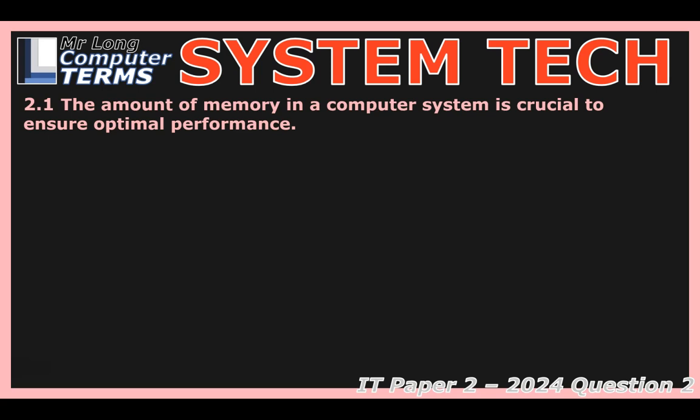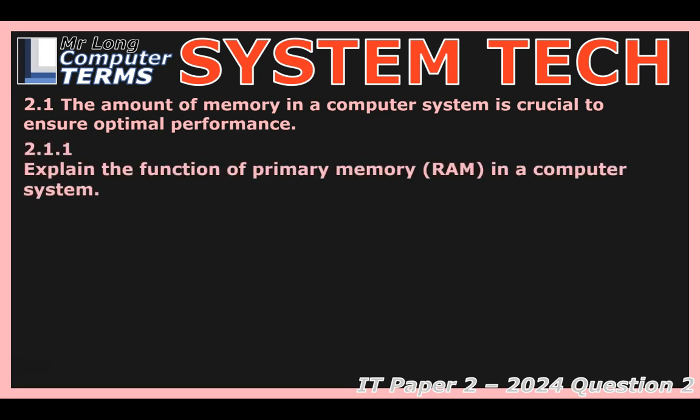Let's start with something everyone hates: slow computers. At a live event, even a tiny delay is a broadcaster's nightmare. This brings us straight to computer performance, starting with memory. We always hear 'get more RAM if your computer's slow,' but what does RAM — primary memory — actually do, especially when speed is critical?